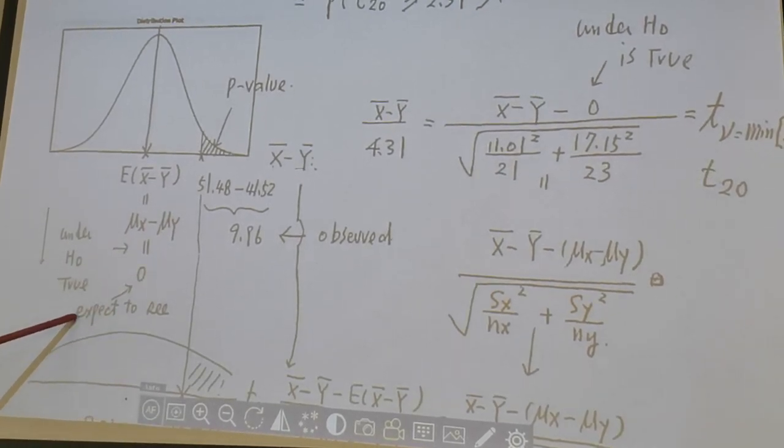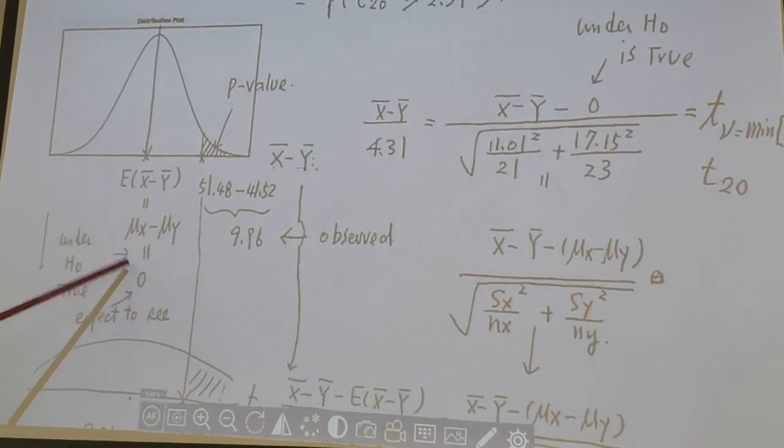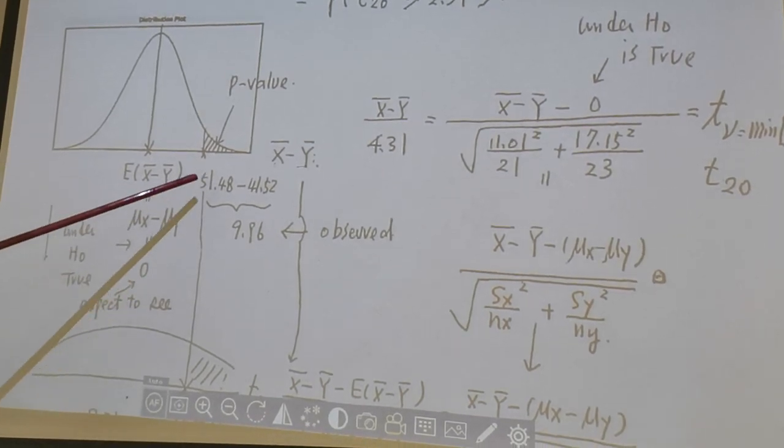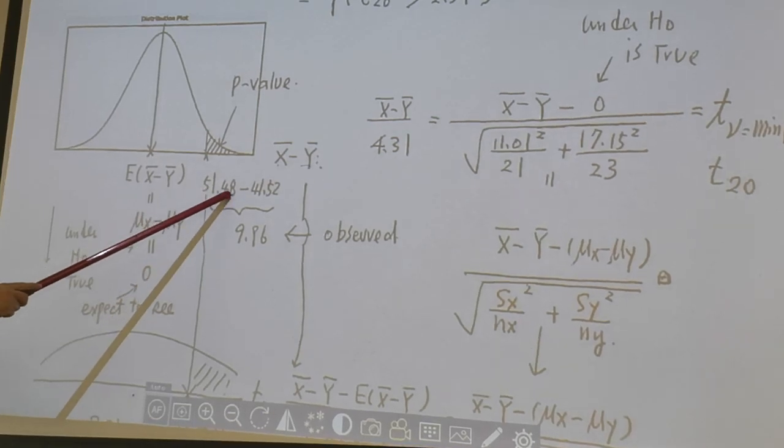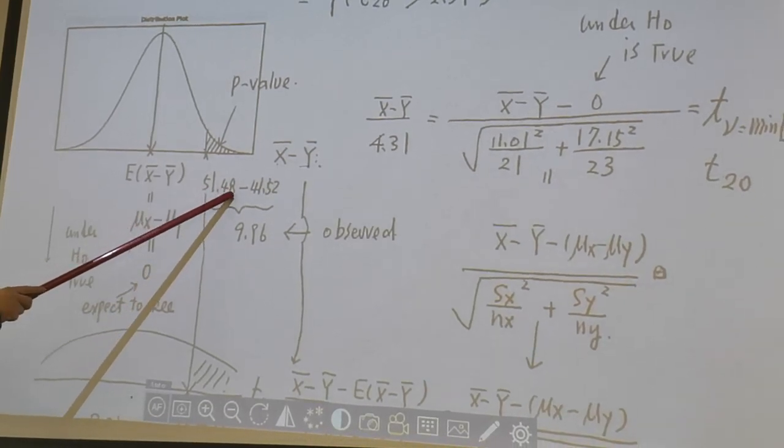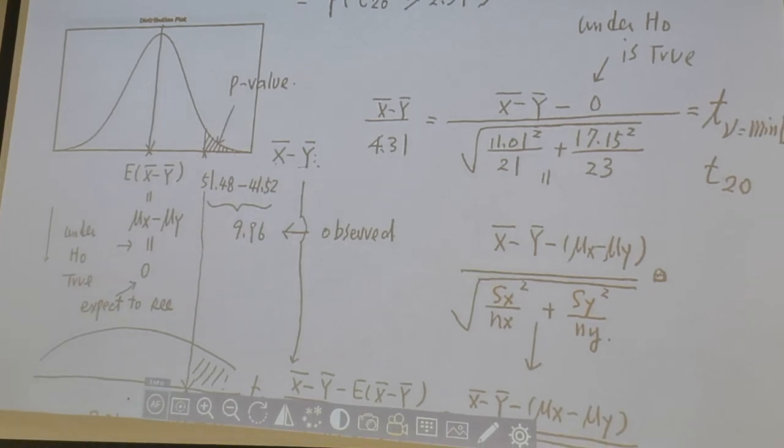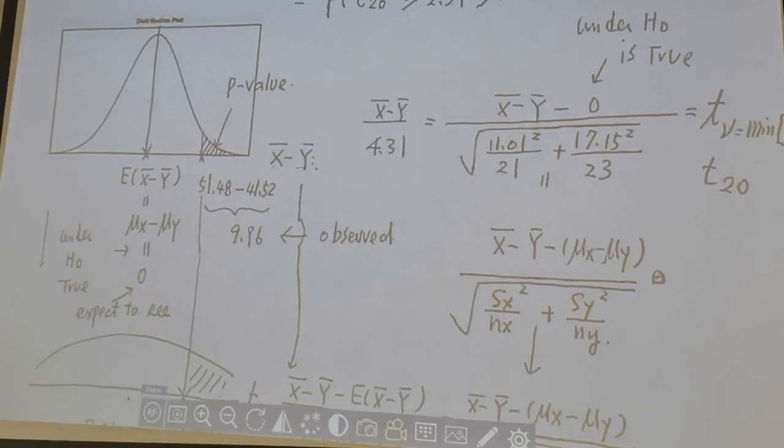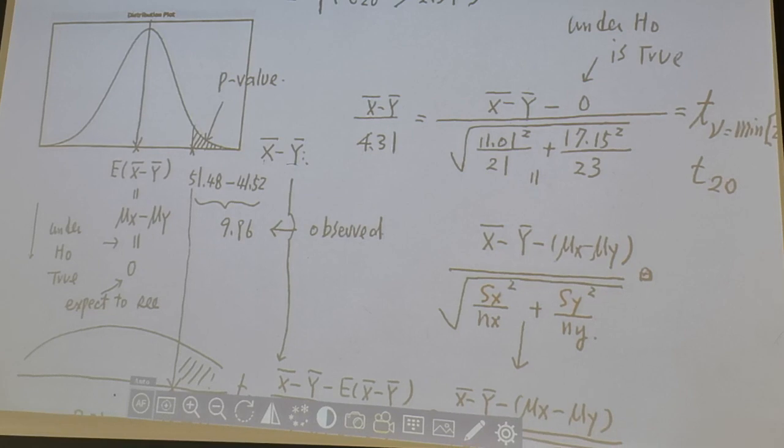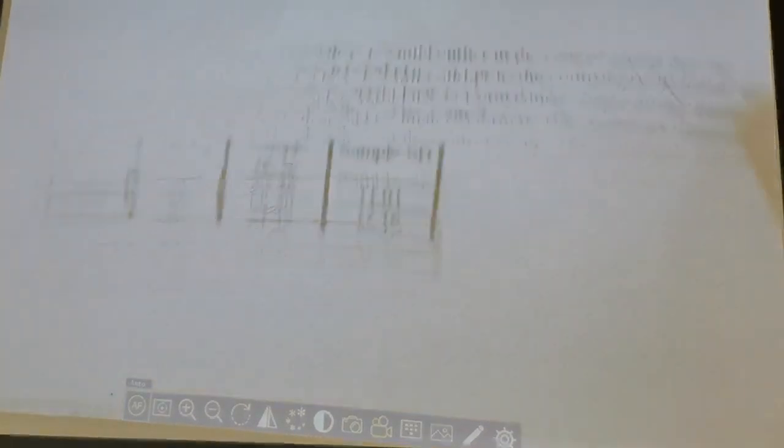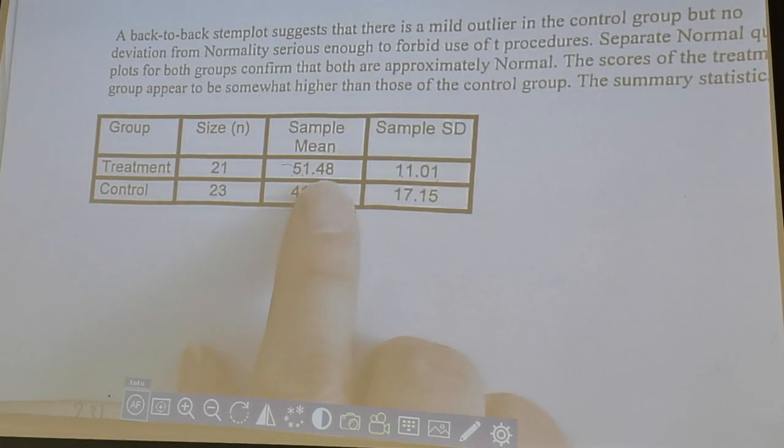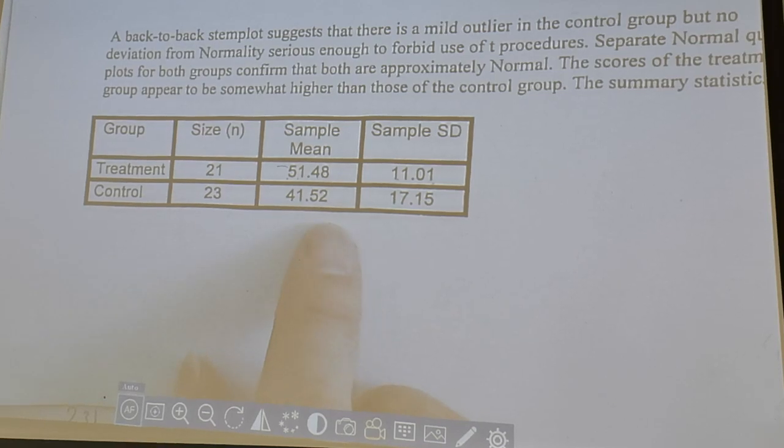So under H0 is true, we expect to see no difference. But what's the data collected says? Well, x-bar is 51.48, y-bar is 41.52. And where are these two numbers coming from? Look at here. This is x-bar, this is y-bar. Remember that?